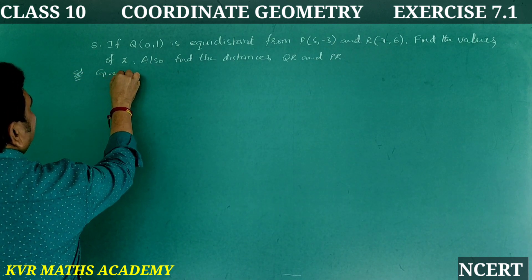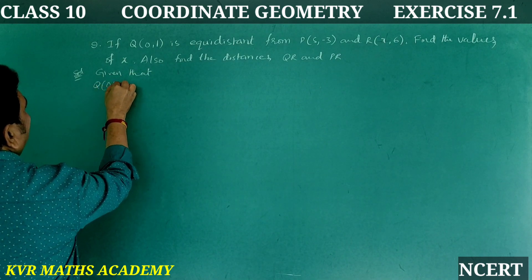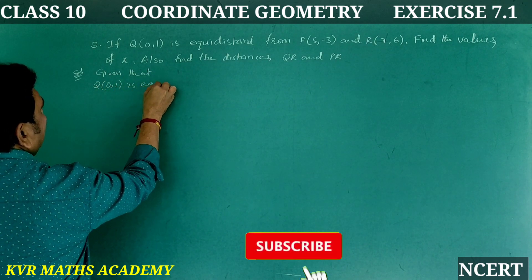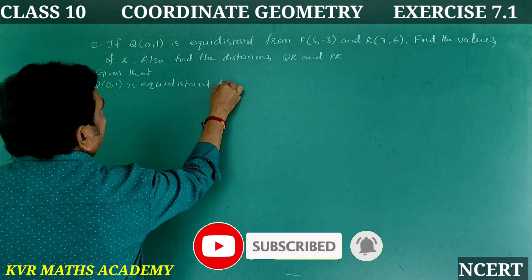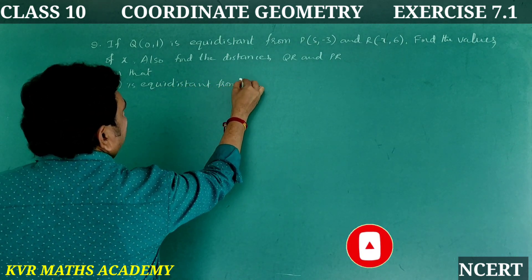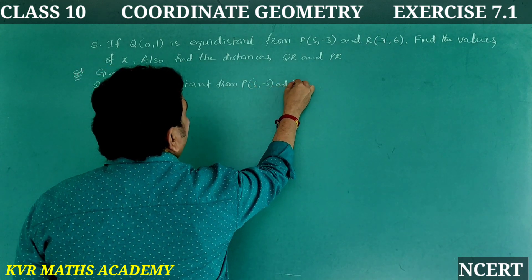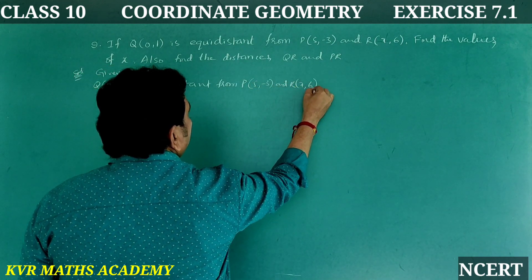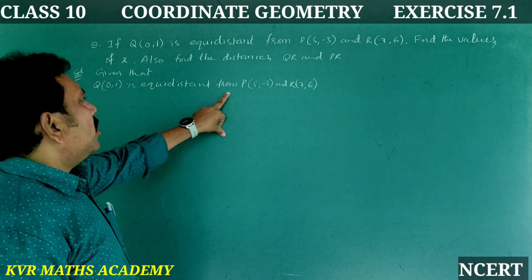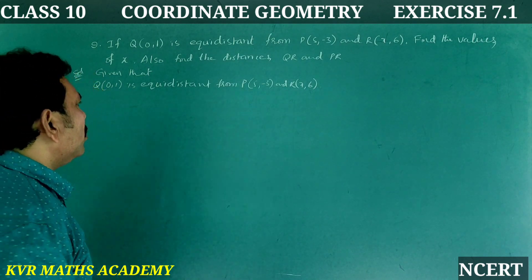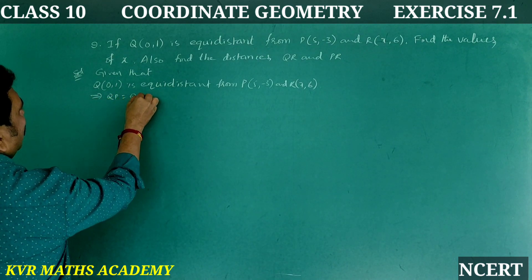Given that Q(0,1) is equidistant from P(5,-3) and R(x,6). Since Q is equidistant from both points, QP is equal to QR.